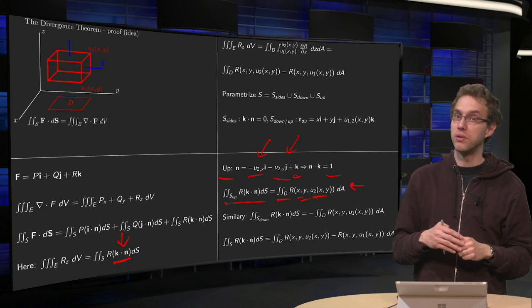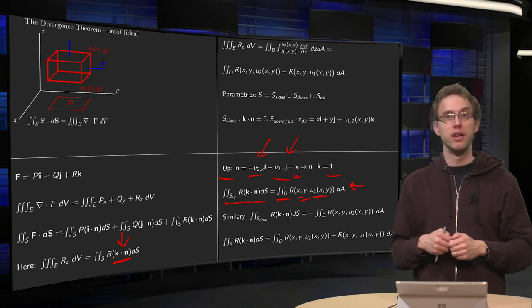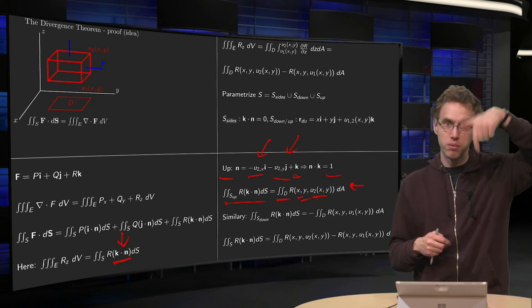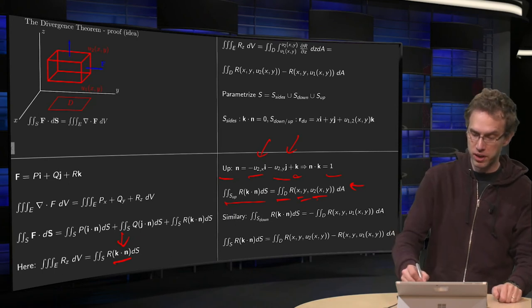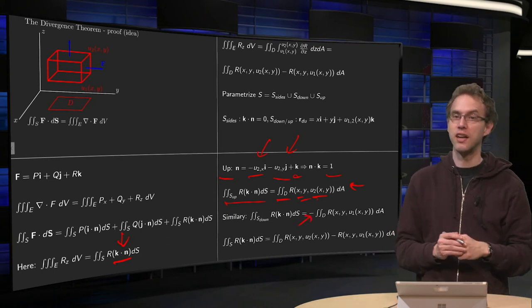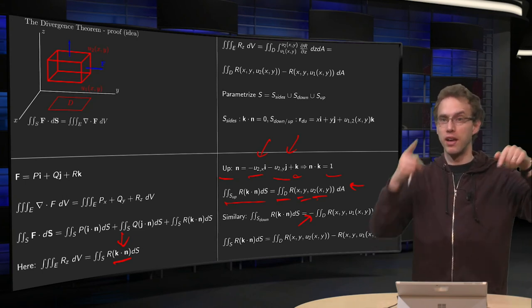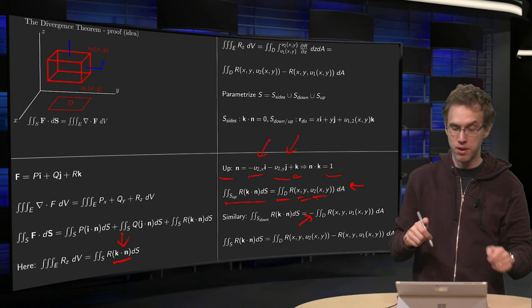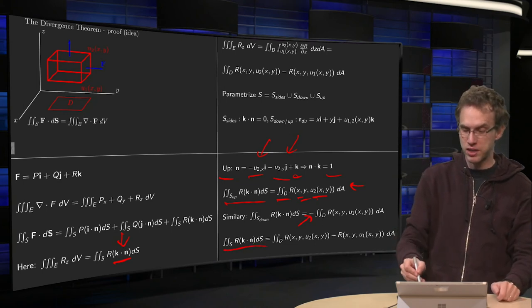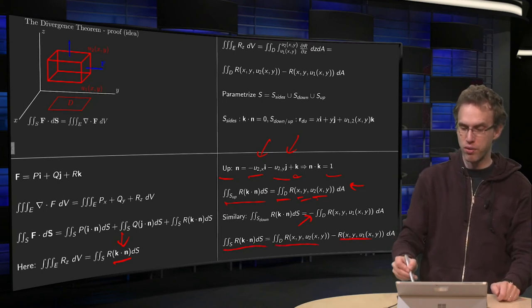Along the lower surface we can do it exactly the same way. Just pay attention, the normal is now pointing in the downwards direction, so you get an additional minus sign. So if you combine those two, upper and lower, and the sides, integral along the sides is zero, so your total integral along S becomes the upper one minus the lower one.